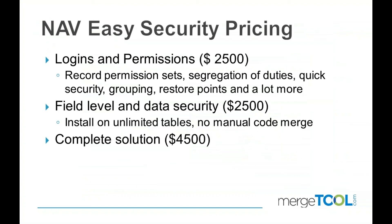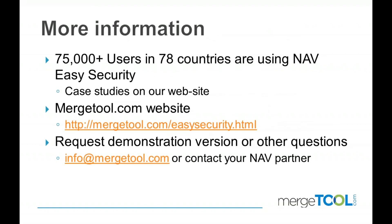We sell our solution in two parts — login and permissions, and field level — each priced at $2,500. If you get the complete solution, it's $4,500. More than 80% of our customers buy the complete solution because they complement each other really well. But you don't have to get login and permissions if you already have security with regular NAV — you can just get our field level and data security. On top of this, there's also a 16% annual enhancement fee, the same as Microsoft normally charges. We also offer fixed price training. We have over 1,000 customers using our solution across the world and have trained more than 200 in North America.